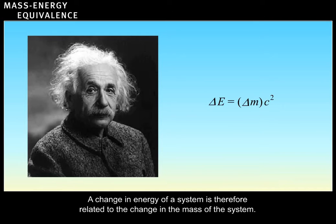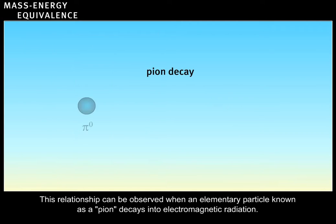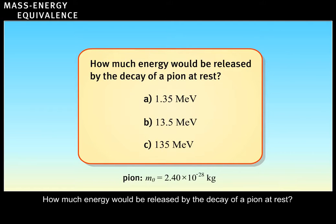A change in energy of a system is therefore related to the change in the mass of the system. This relationship can be observed when an elementary particle known as a pion decays into electromagnetic radiation. How much energy would be released by the decay of a pion at rest?